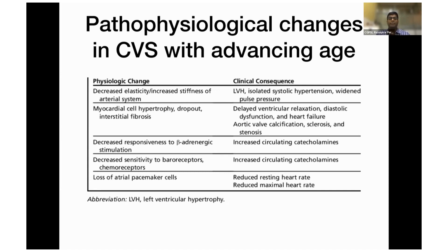In the heart, there will be myocyte death and hypertrophy of the myocyte. The left ventricle becomes stiffer and leads to poor relaxation, causing diastolic dysfunction. The loss of myocytes leads to heart failure, which could be diastolic or systolic dysfunction. Commonly in elderly patients, they come with heart failure symptoms but when you do echocardiography, their ejection fraction is normal — this is heart failure with preserved ejection fraction, which is very difficult to treat.